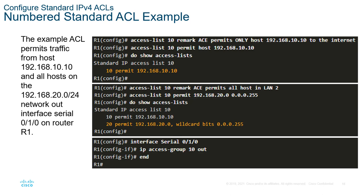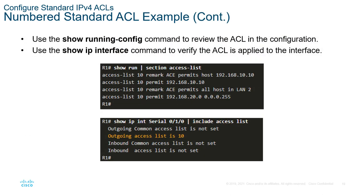Remember that ACLs have an implicit deny at the end. So even though we have two permits, if traffic doesn't match one of those, it will match the implicit deny. To verify, we can use two show commands: 'show running-config' piped to the access-list section, or 'show ip interface' to look at the access lists applied to that interface.